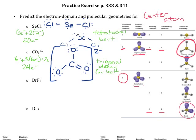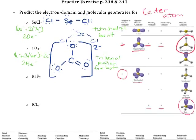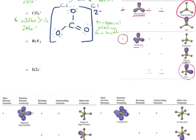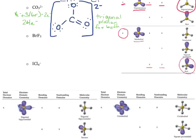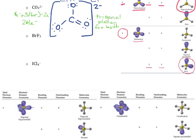Let's look at the next molecule: BrF₃. We'll do this the same way we always would. Bromine brings 7 valence electrons. We've got 3 fluorines also each bringing 7 valence electrons. That gives us a grand total of 28 valence electrons.